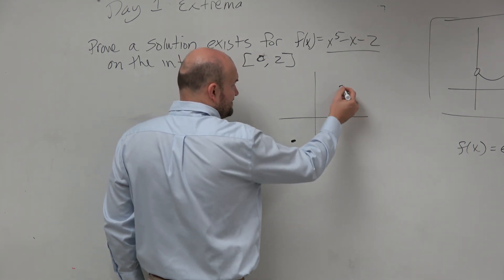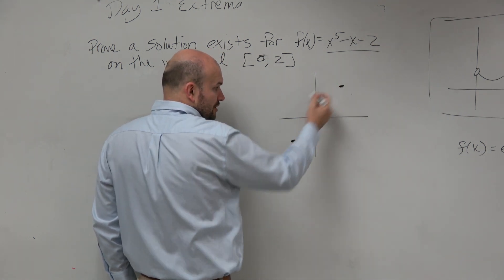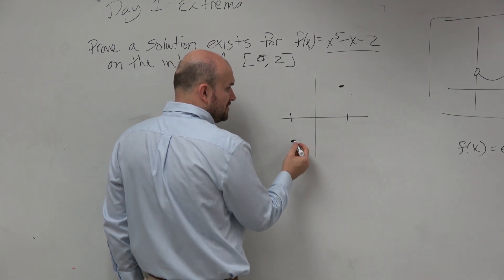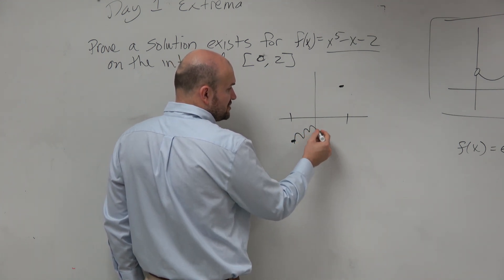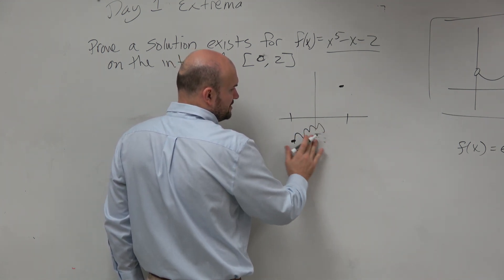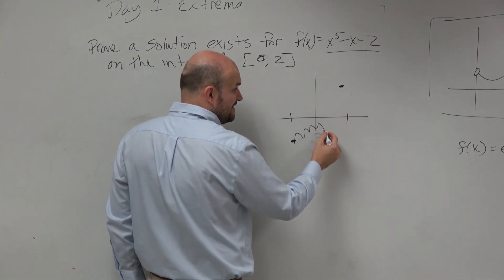If we have some negative value, we have some positive value, it's on a closed interval. And we know the function is continuous. Doesn't matter what the function is. Well, it can't go under itself, but eventually, to get to positive, it has to cross.